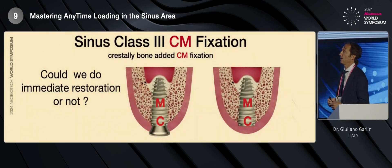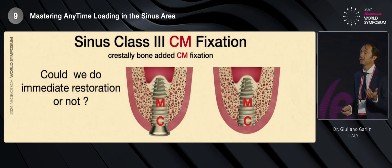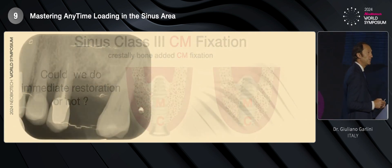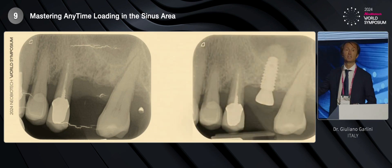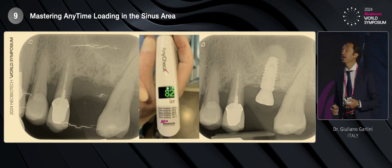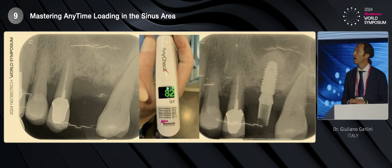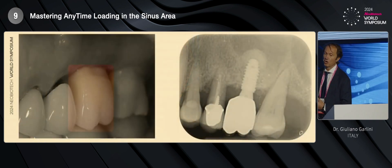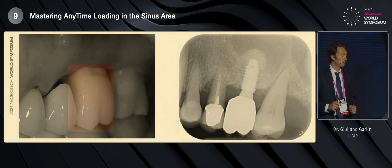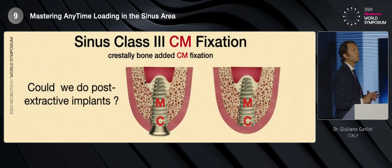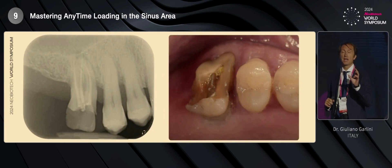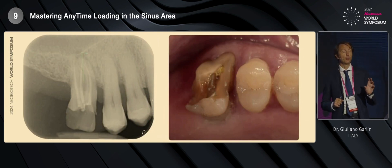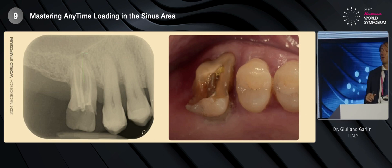As I told you at the initial part of the lecture, my goal is to insert an immediate restoration. So, we can do the same if we have planned for an immediate restoration. We insert the implant, we insert the healing screw, I use AnyCheck — in this case a very good value of 82 EIST — so I decided to perform a provisional restoration and then the final crown when we had the healing of the soft and hard tissue. Could we do post-extractive implants in sinus class 3? Yes, we can. We can use the bone septum between the roots of the molar, for example.